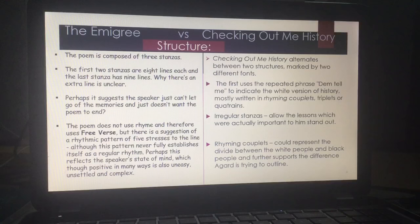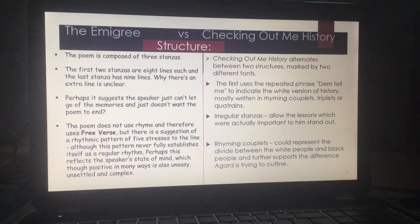This could reflect the speaker's state of mind, which, whilst it is positive, remains uneasy, unsettled, and quite complex. Because in The Emigrée, whilst she keeps referring to this sunlight clear memory — this place that tastes like sunlight, and 'it cannot break my original view' — there are undertones of something unsettling: 'it may be sick with tyrants,' 'it's war-torn, I am told.' So there is this undertone of something more ominous in terms of where she's come from.